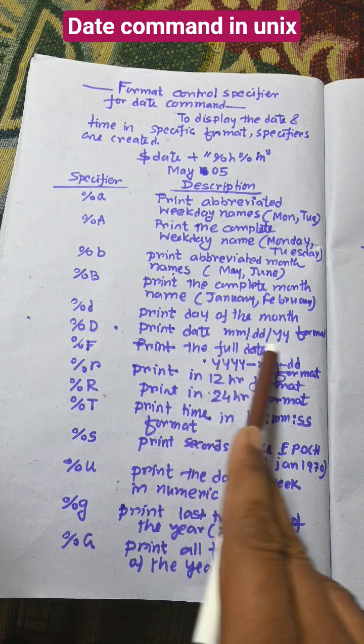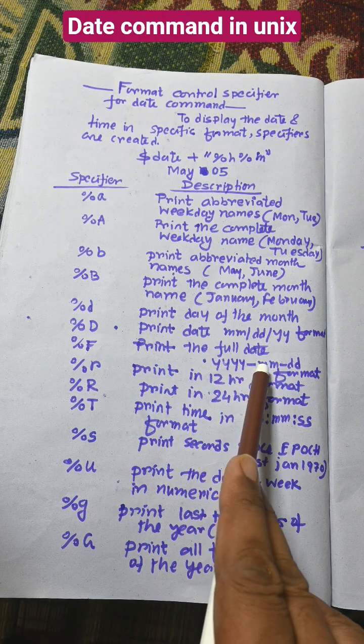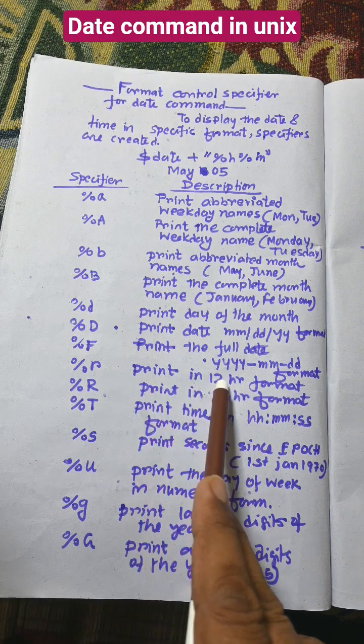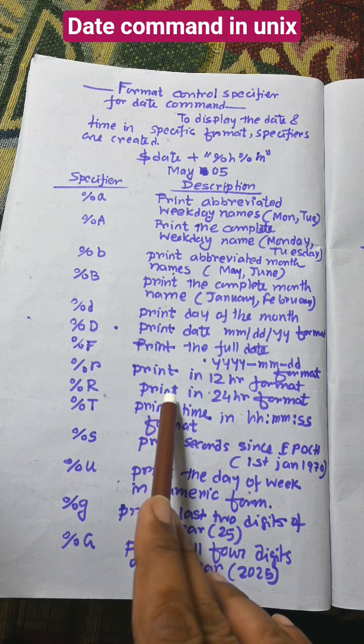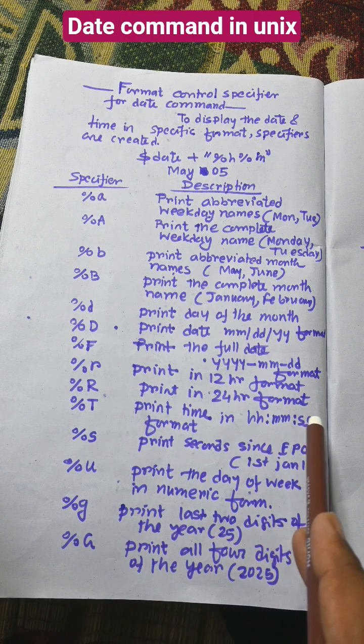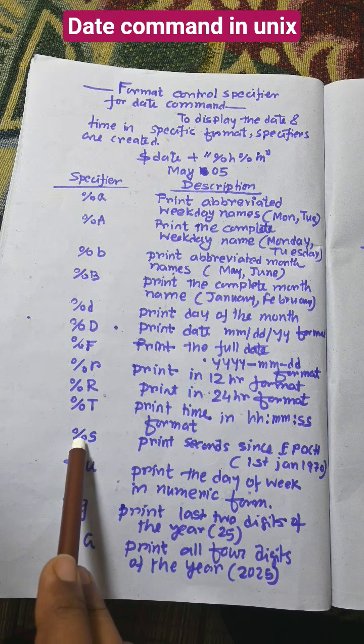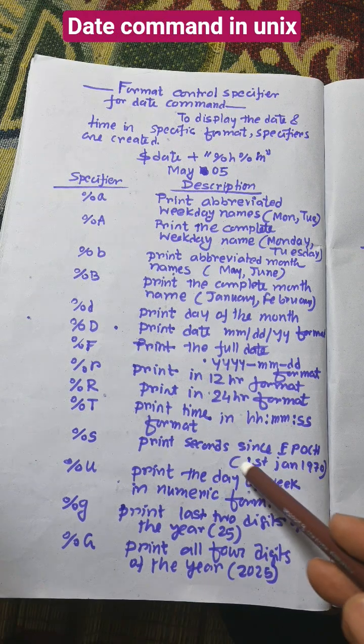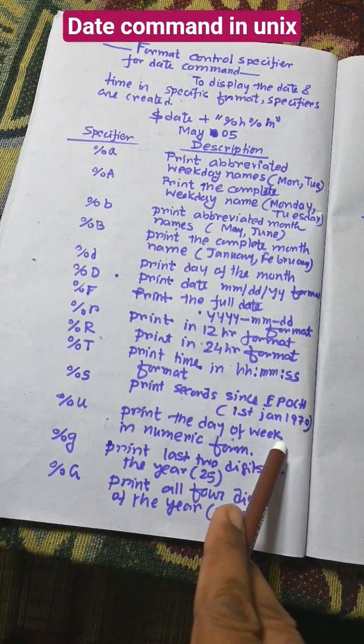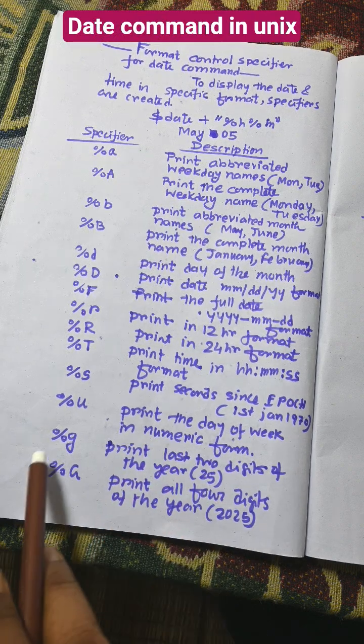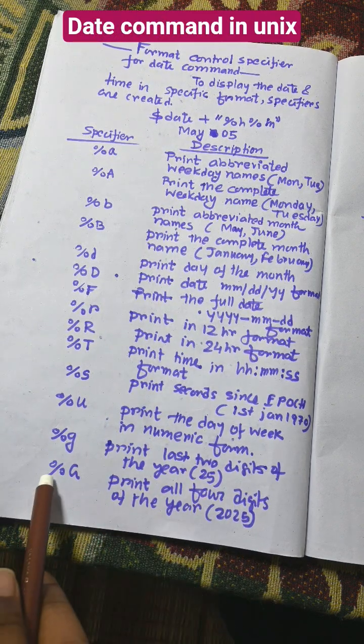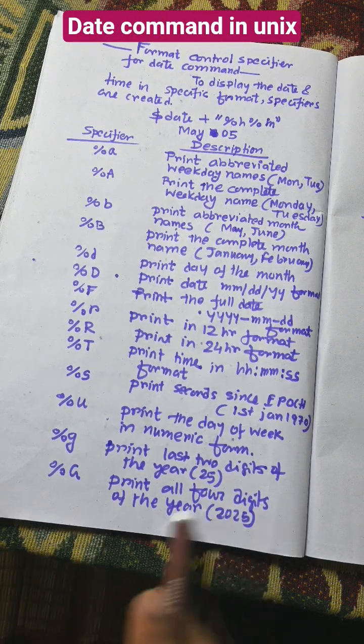%F prints the full date in yyyy-mm-dd format. %r prints 12 hour format. %R prints 24 hour format. %T prints the time. %y prints the last two digits of the year. %Y prints all four digits of the year.